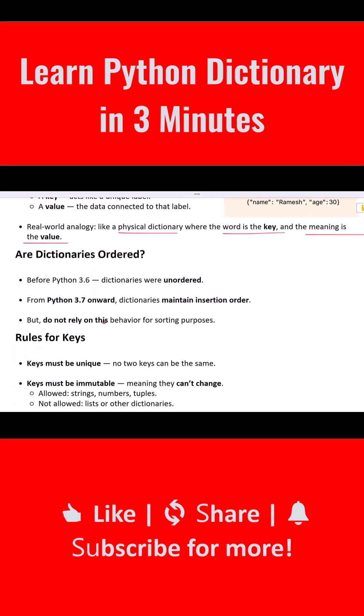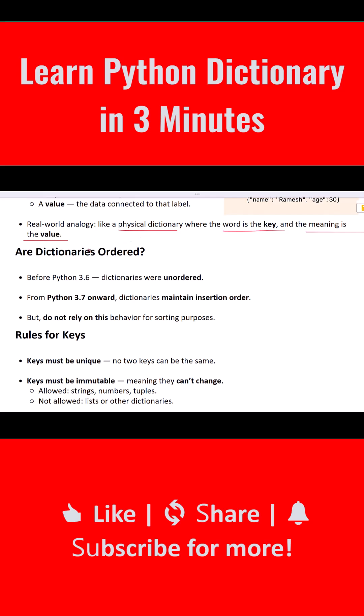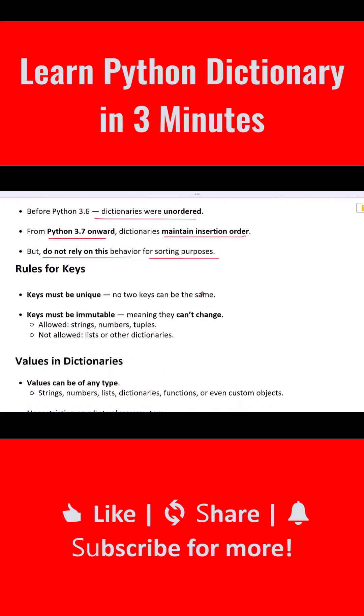Now let's understand important key points about Python dictionaries. Dictionaries are unordered until Python 3.6. In older versions of Python, dictionaries were completely unordered, but starting from Python 3.7, they maintain the insertion order of items. That means items will stay in the order you added them. Still, you should not rely on this for sorting.